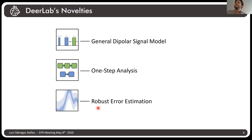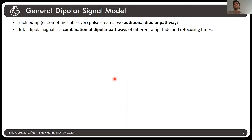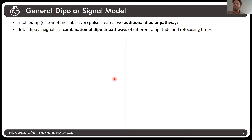Let's talk about this general dipolar signal model. We want to think about what pump pulses actually do. A pump pulse — or any other event that causes inversion of the pump spins — every time it inverts a pump spin, it can create two additional dipolar pathways. If you have several of these pulses, at the end you generate a whole branch of different dipolar pathways your pump spins can go through, meaning your total dipolar signal will always be a combination of these different dipolar pathways, each having different amplitudes and refocusing times.